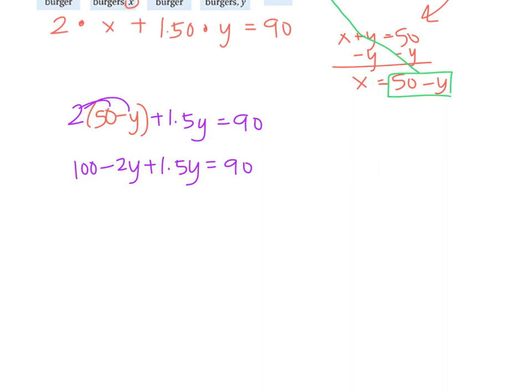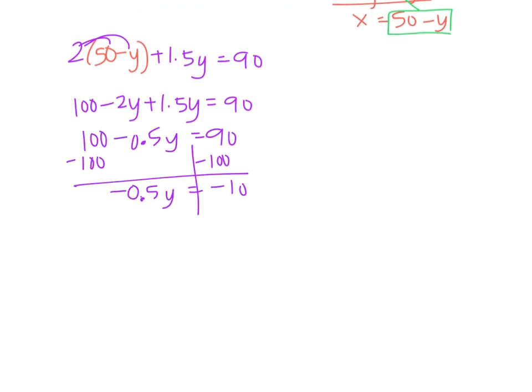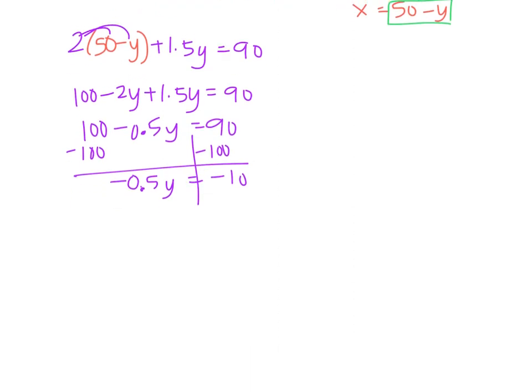We get that's 100 minus 2y plus 1.5y equals 90. Combine like terms. I get 100 minus 0.5y equals 90. Then I subtract 100. Negative, don't forget to bring down the negative. Negative 0.5y is equal to negative 10. Let's keep going. Divide by negative 0.5.